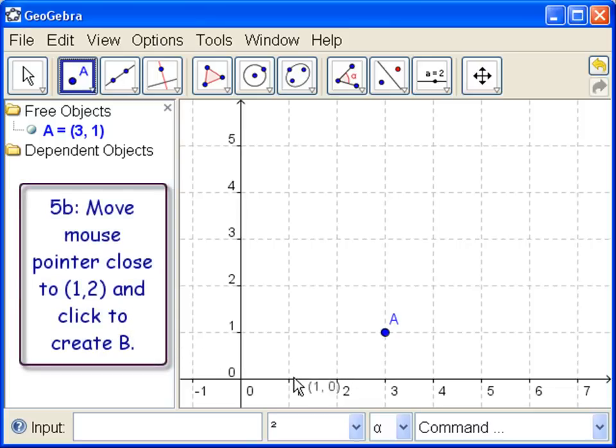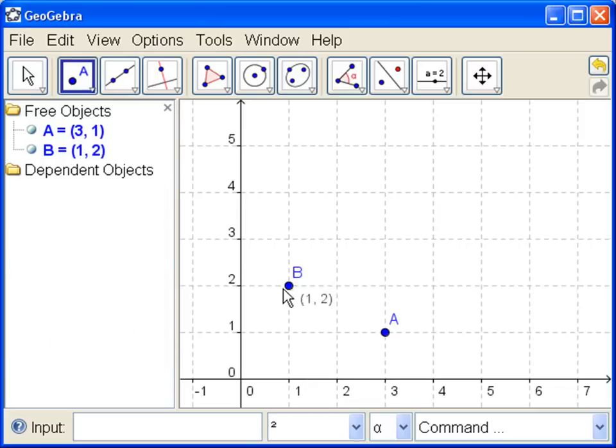Let's make a new point at 1, 2. So we get to 1, 2 and click. There it is, 1, 2, and notice it's blue because it is also a free object.